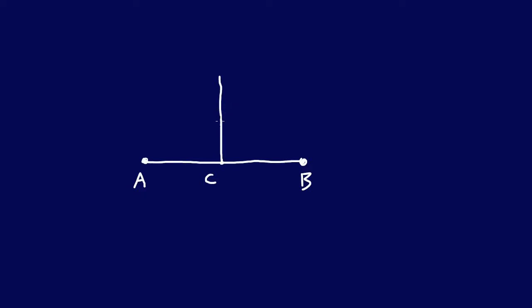And so after we draw the perpendicular bisector, well, what can we say about the original line segment AB? It's cut in two pieces now, and we can say that line segment AC is congruent to line segment BC. So these two segments are congruent by definition of what a bisector is.